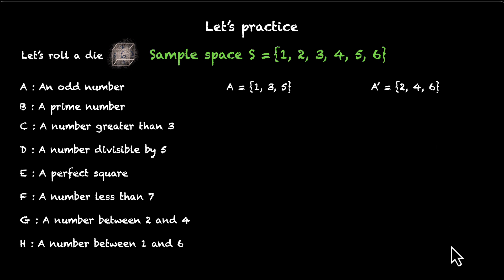Let's move to the next one. A prime number. We have three prime numbers: 2, 3, and 5. So, that's our set B. Anything except 2, 3, and 5. That's B dash, 1, 4, and 6. So far, so good. A number greater than 3. Now, we have to be careful. It says greater than 3. It does not say 3. So, this set, this event will have 4, 5, and 6. What about its complement? Its complement will have 1, 2, and 3.